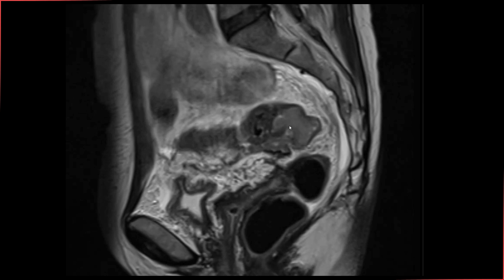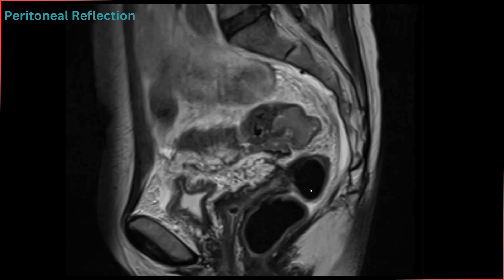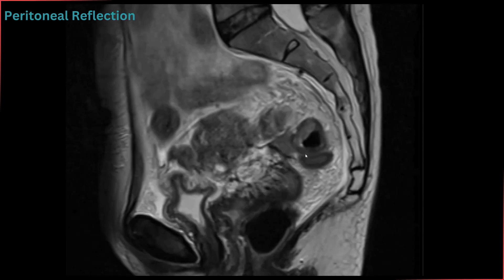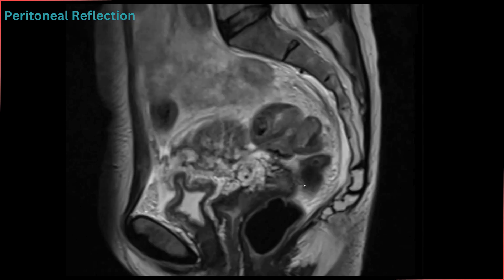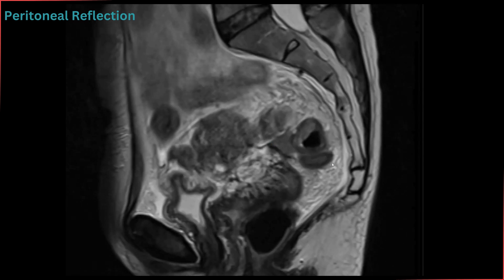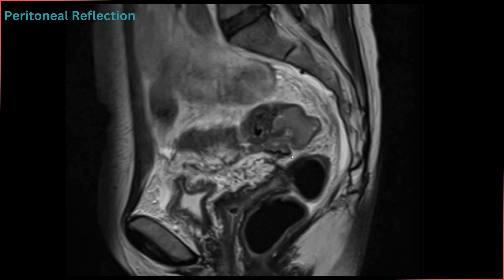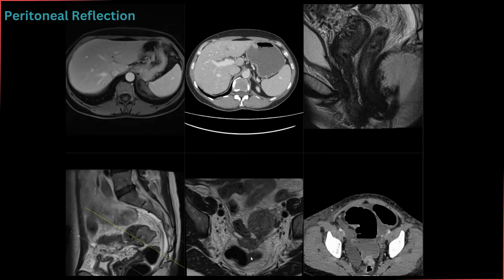This tumor appears to extend outside of the rectal wall, extending anteriorly. Do you remember the band-like thickening we discussed in our rectal MRI anatomy modules? This is the peritoneal reflection, and in females it is identified just above the cul-de-sac. The cul-de-sac lies between the rectum and the cervix, and you can see a band of thickening between these two areas. The typical V-shaped appearance is not seen here because the tumor has infiltrated this peritoneal reflection — this would be nicely seen on axial images as well.